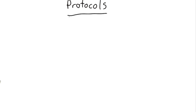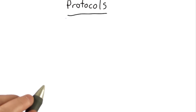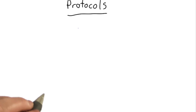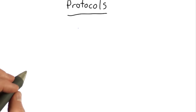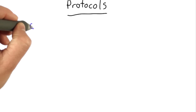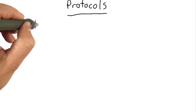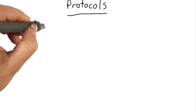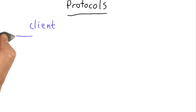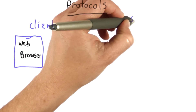What we need to make a network work is a protocol. A protocol is a set of rules that people agree to that tell you how two entities can talk to each other. So for the web, the protocol gives rules about how a client and a server talk to each other. The client is the web browser, and the server is the web server.